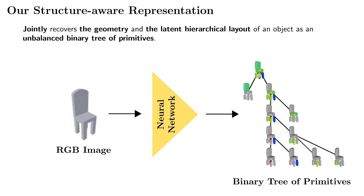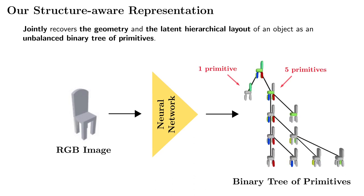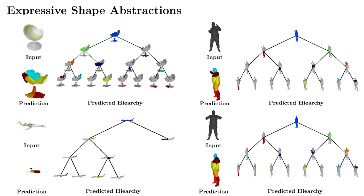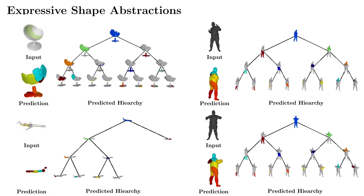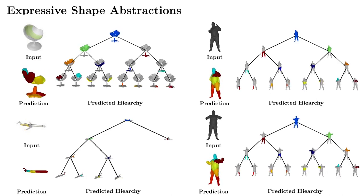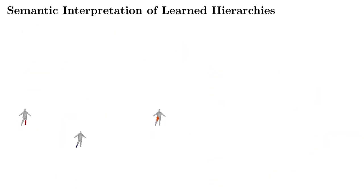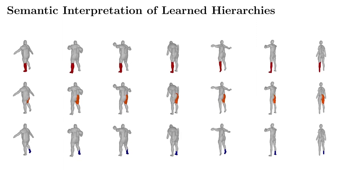In this work, we propose a novel method that allows to jointly recover the geometry and the latent hierarchical structure of an object as an unbalanced binary tree of primitives, where simple parts are represented with fewer primitives and more complex parts with more. Our model is learned in an unsupervised fashion without any part-level supervision. Evaluations on Shapenet and Dynamic Faust show that considering the organization of parts improves the reconstruction quality. Our learned hierarchies have a semantic interpretation as the same node is consistently used for representing the same object part.